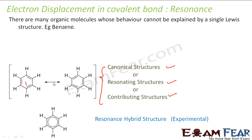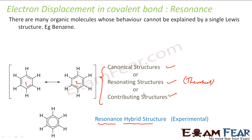You have structure one and structure two for benzene, but you cannot explain the properties of benzene based on these structures alone — the magnifying glass shows the bond lengths are uniform, not alternating. They can be explained by something else, called the resonance hybrid structure, which is more experimental. The resonance hybrid structure is the actual structure and it explains the physical and chemical properties of benzene.